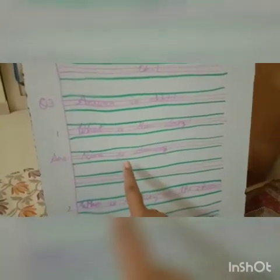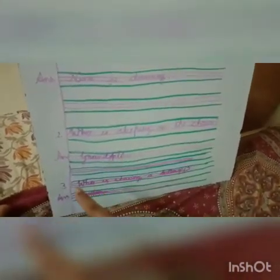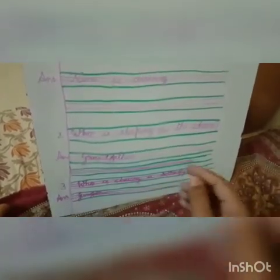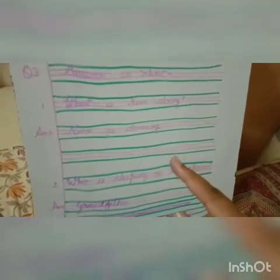Let's review: What is Nina doing? Nina is drawing. Skip one line. Who is sleeping on the chair? Grandfather. Number 3: Who is chasing a butterfly? Who was running after the butterfly? It's Ginger. So you will write Ginger. Please write in your notebook with neat and clean handwriting. Thank you.